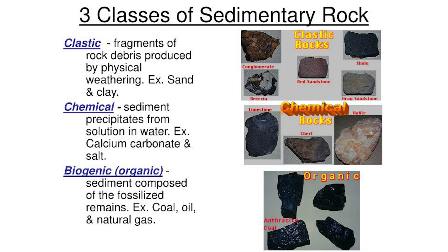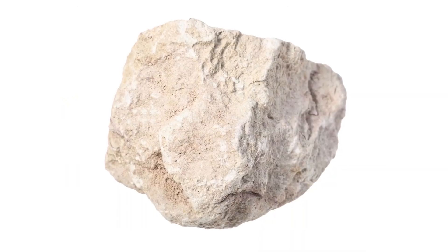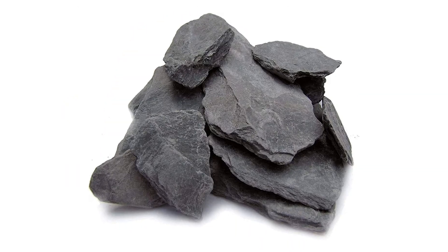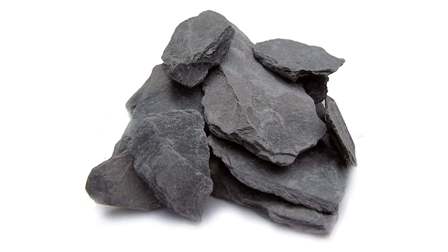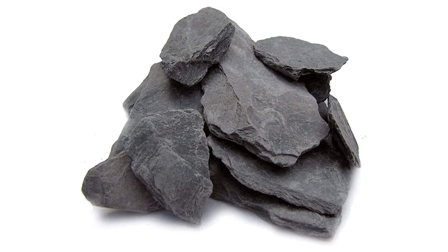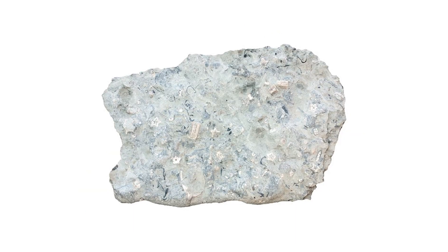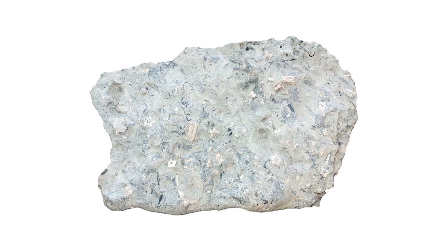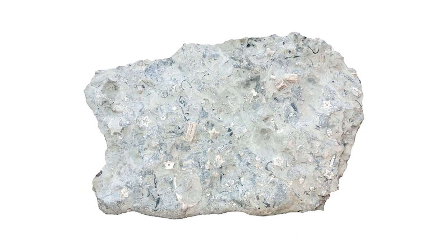There are three main types of sedimentary rocks, based on the type of sediments they're made out of. First, you have clastic rocks, like sandstone and shale — these are made from fragments of other rocks. Then you have chemical sedimentary rocks, like limestone.